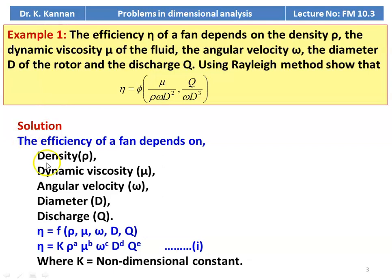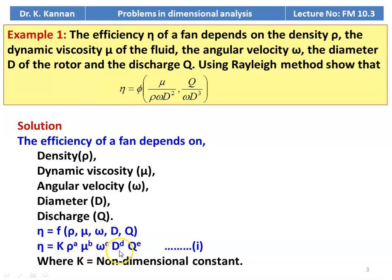The solution: the efficiency of the fan depends on density, dynamic viscosity, angular velocity, diameter, and discharge. We write the functional relationship: eta equals a function of rho, mu, omega, D, and Q. We express this as eta equals K (a non-dimensional constant) multiplied by rho to the power a, mu to the power b, omega to the power c, D to the power d, and Q to the power e. We take this as equation number 1.